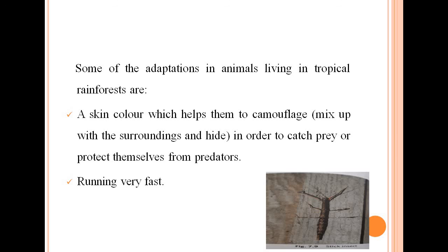Just as in hot desert climates, animals here are more active during early mornings, evenings, or nights. Gorillas, monkeys, jaguars, sloths, and colorful birds such as macaws can be found in this region. Animals such as leaf insects and stick insects are shaped or colored to match their surroundings, making them harder to spot. This skin coloring helps them camouflage in order to catch prey or protect themselves from predators. Another adaptation is that they can run very fast to escape from predators.